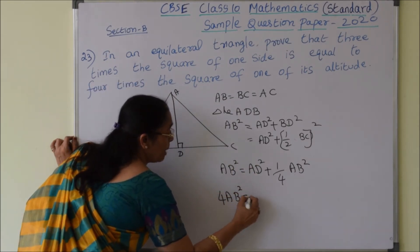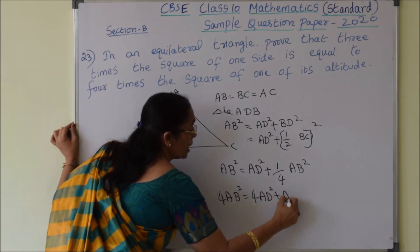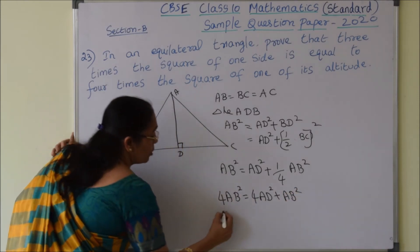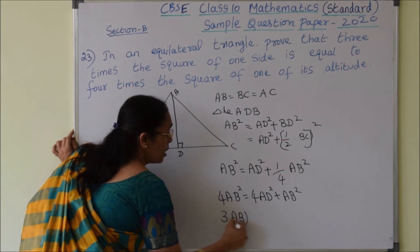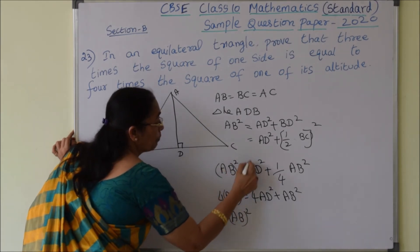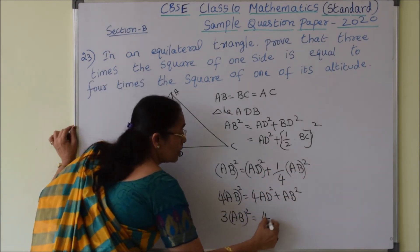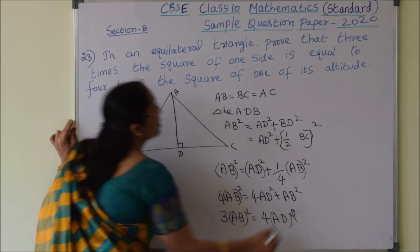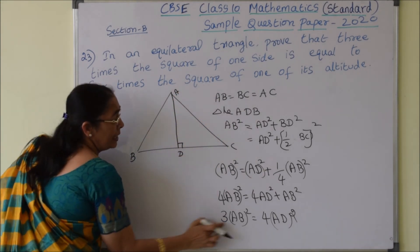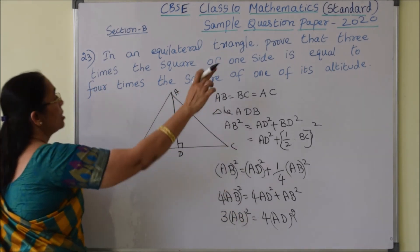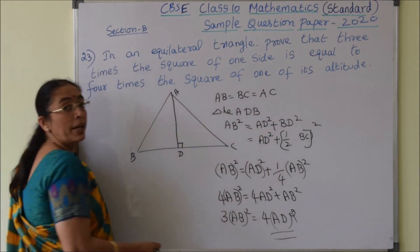Taking LCM and cross multiplication, 4 times AB square equals 4 times AD square plus AB square. Bringing AB square to the other side, 4 times AB square minus AB square gives 3 times AB square equals 4 times AD square. This is exactly what we had to prove: three times the square of one side is equal to four times the square of one of its altitudes.